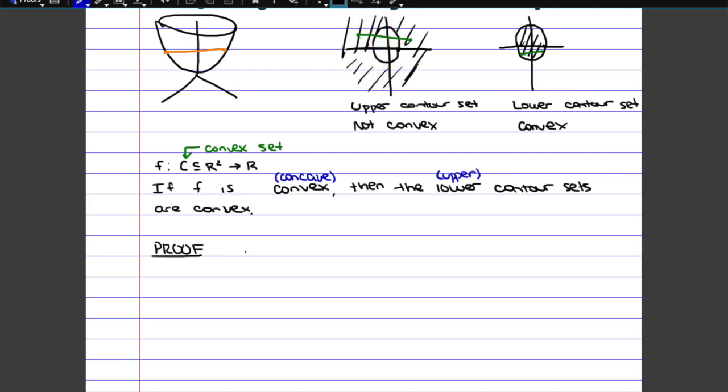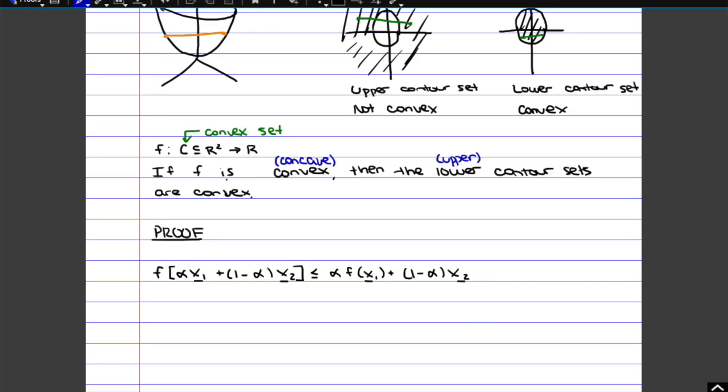So formally, if we use the definition of convex with linear combinations, that's saying that f of alpha x₁ plus 1 minus alpha x₂, this would represent the point on the function, is smaller or equal to the point on the segment.